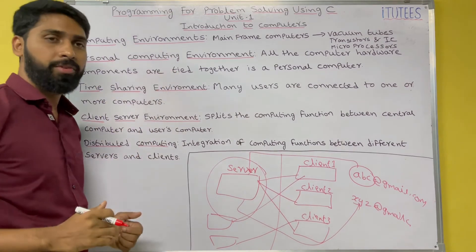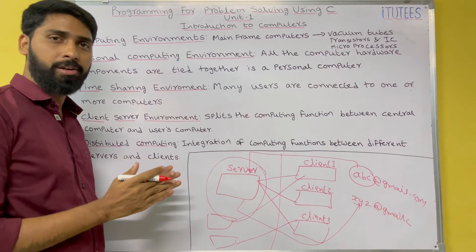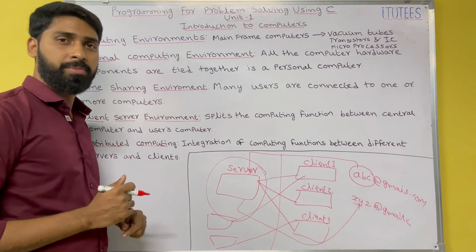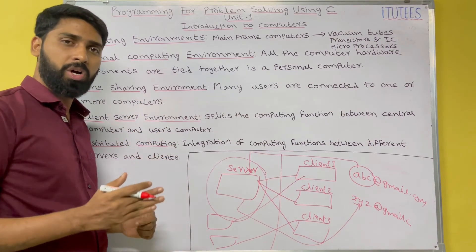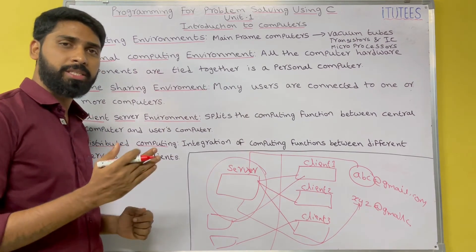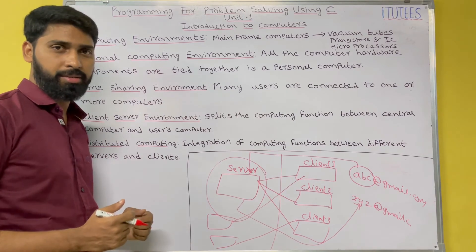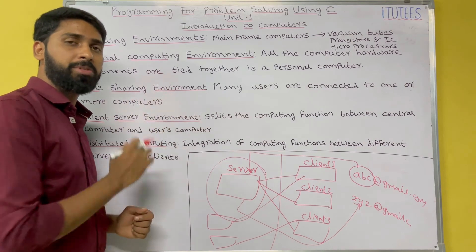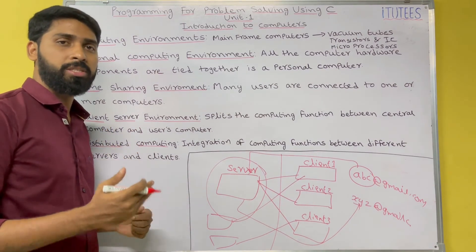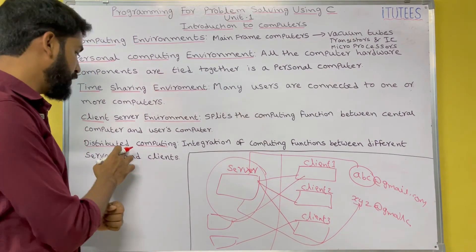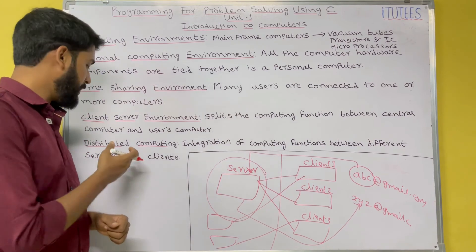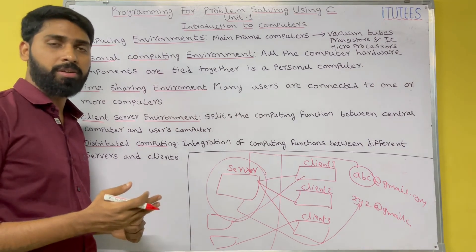To summarize: the personal computing environment is nothing but a standalone system — it does not connect with any other systems. In the time sharing environment, there is one central system connected with resources like a printer and hard disk, and this central system shares its time among the clients. In the client-server environment, the server provides services to the clients. The difference between time sharing and client-server is that in time sharing, the central system provides services based on time slots, whereas in client-server the server provides services based on resources. In distributed computing, there is more than one server providing services to all the clients.